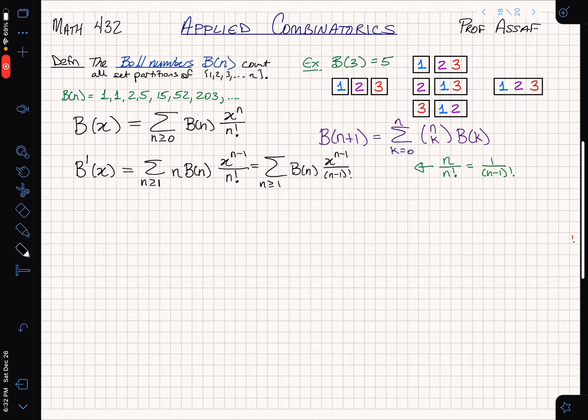Now let's use a fairly simple fact, which is that n divided by n factorial is equal to 1 over (n-1) factorial. That's a fairly simple fact, but it comes in handy right here. Let's simplify this out and I get the sum n greater than or equal to 1 of B(n) x to the n minus 1 divided by (n-1) factorial.